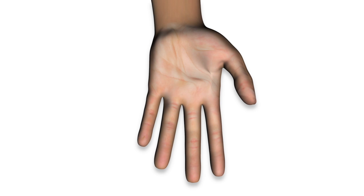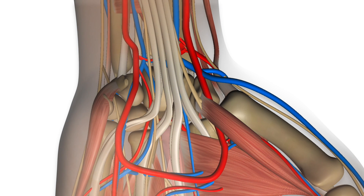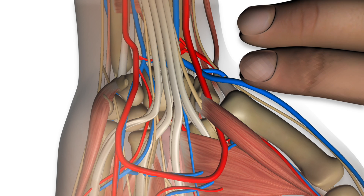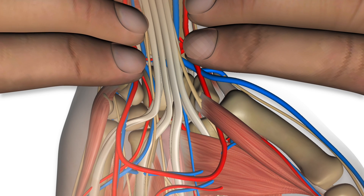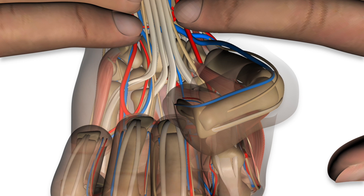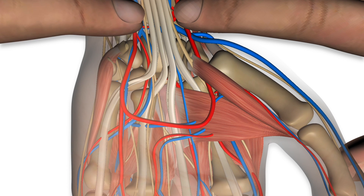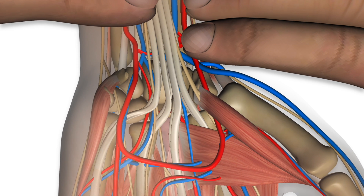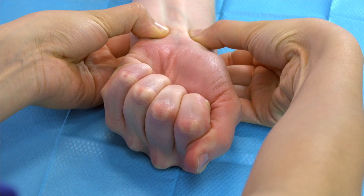This involves applying pressure at the site of the radial artery, as well as the location where the ulnar artery should be present. The patient then makes a tight fist, which squeezes the majority of the arterial blood out of the hand. We then release the pressure that is placed over the ulnar artery. And if there is an adequate collateral supply via the ulnar artery, then the hand should be reperfused almost instantly.